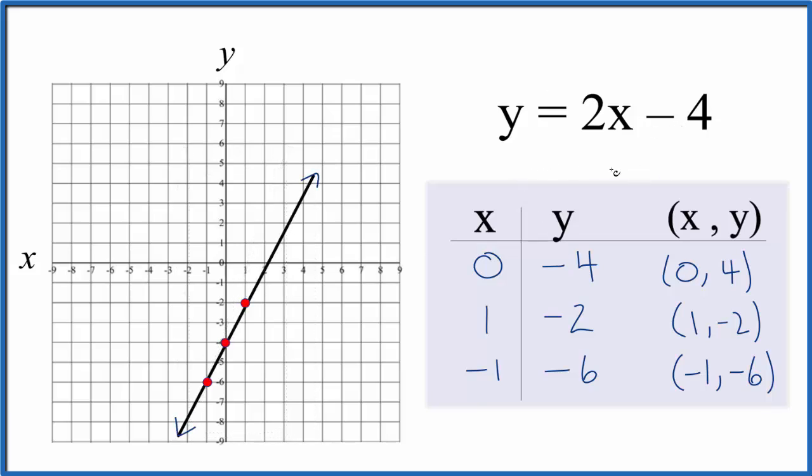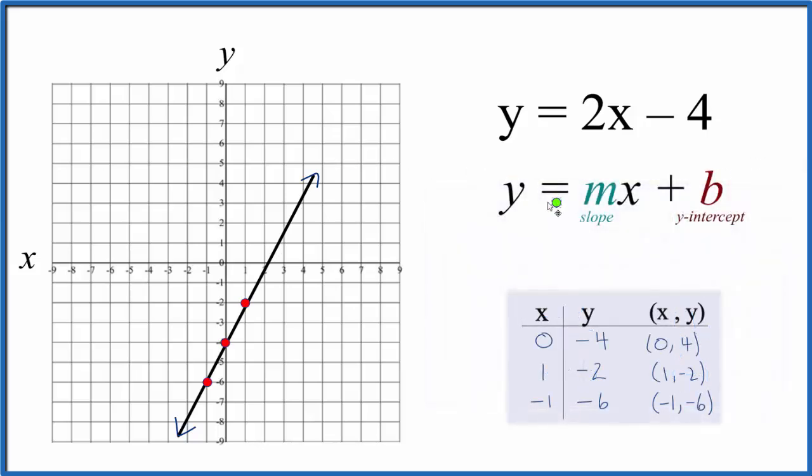Let's check this with the slope intercept formula. So we have y equals mx plus b, and b is the y-intercept. That's where we go down the y-axis, the line will go through the y-axis, and b is negative 4 up here. So we find negative 4 on the y-axis, and there is b. So that's our point, our first point.